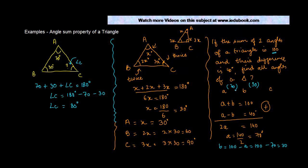The sum of all these three angles has to be 180 degrees: A plus B plus C. If this is 70 and this is 30, 100 is gone here, so C has to be 180 minus 100, or 80 degrees. So these were some of the examples on the angle sum property of a triangle.